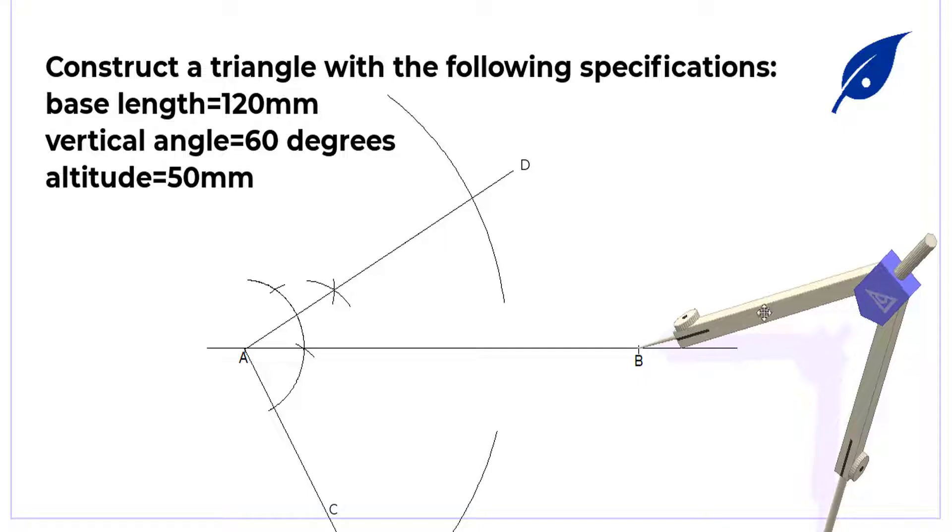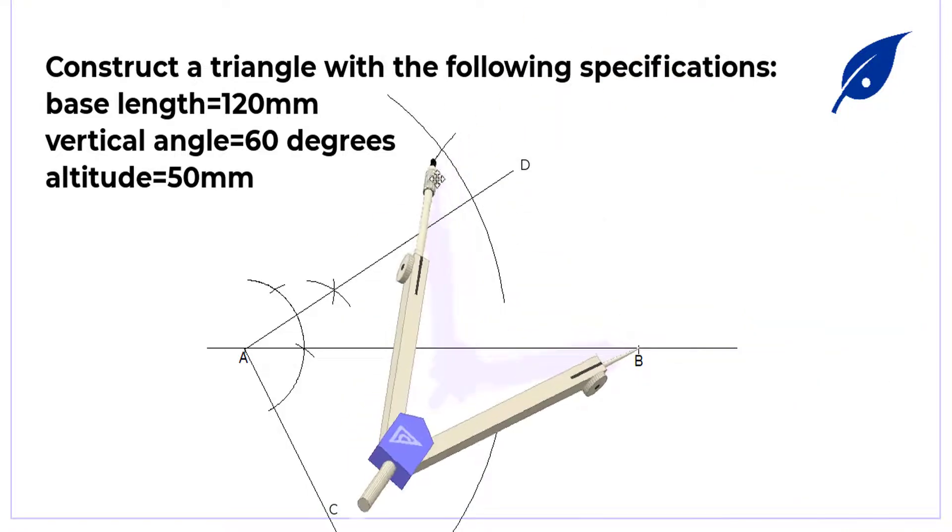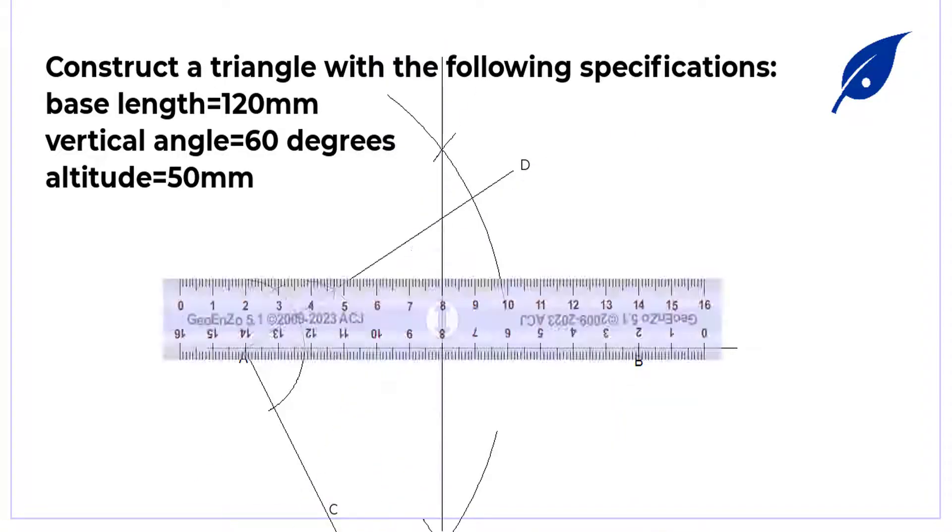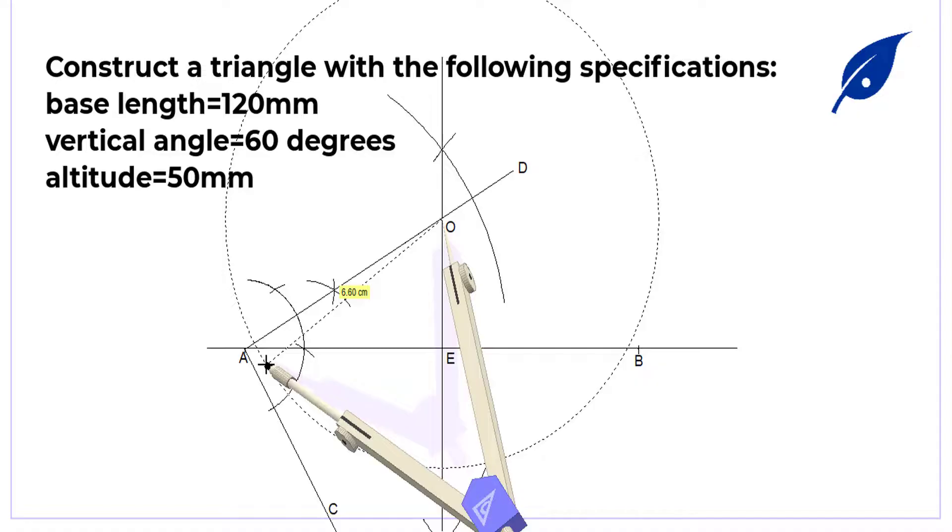So the line which is extended, that is passing through E, when it touches the line AD, it will give us the point O, which is the midpoint of our circle, which we are going to draw in order to get the remaining sides of our triangle.